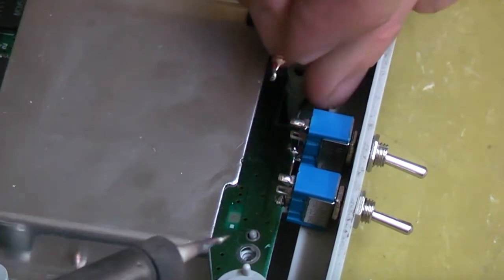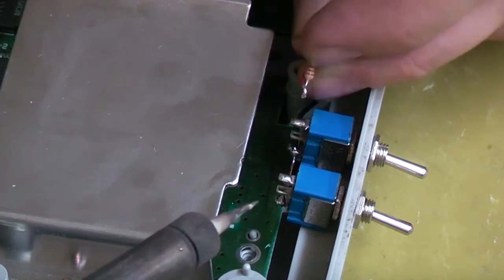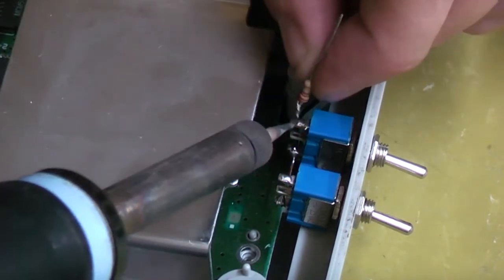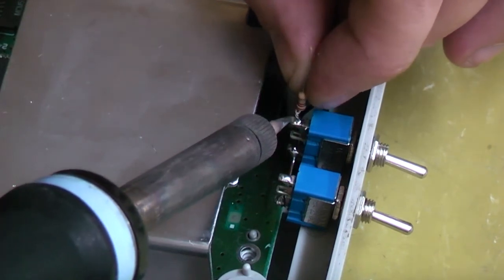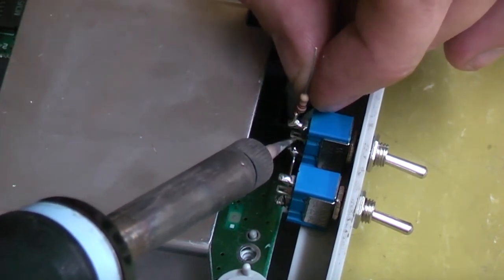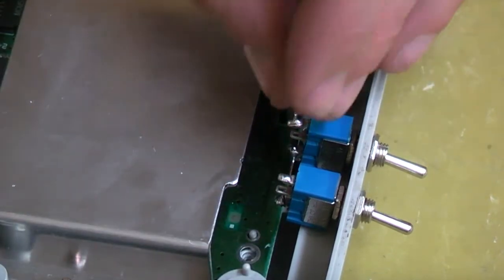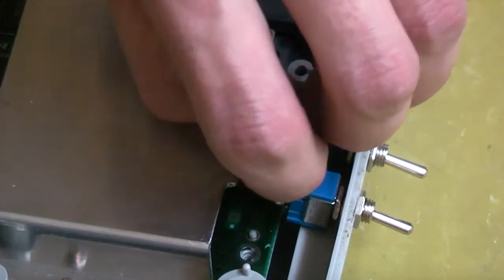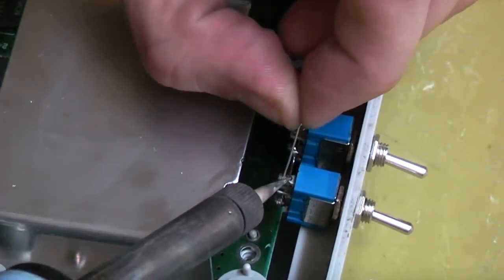And all we're going to do is solder our end onto the top of the switch, and then the other side of the resistor is going to go over to the other switch, again on the top row.